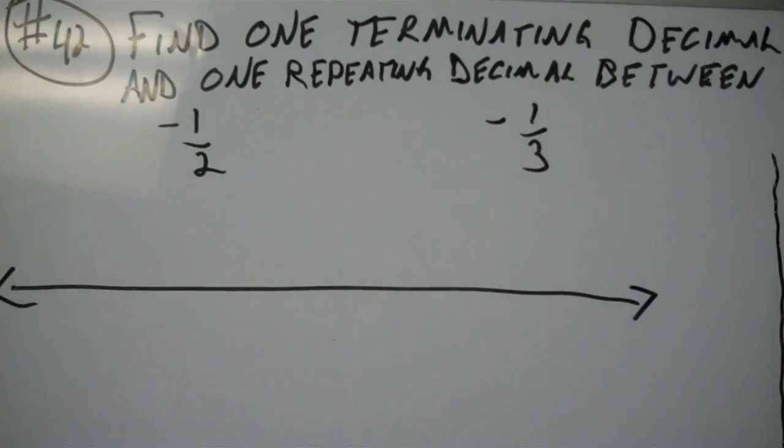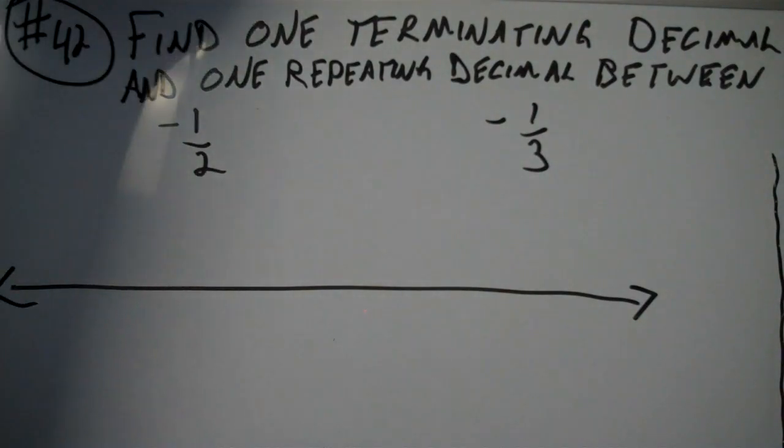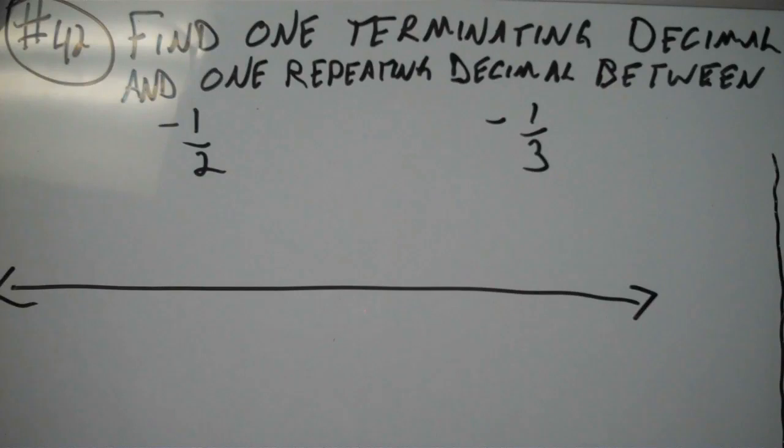All right, this is Mr. Duncan. Today in class, we noticed that there was a lot of questions in the homework about number 42. This is from section 2.1, and that is on page 48 and 49, and this is problem number 42. It says, find one terminating decimal and one repeating decimal between negative one-half and negative one-third.